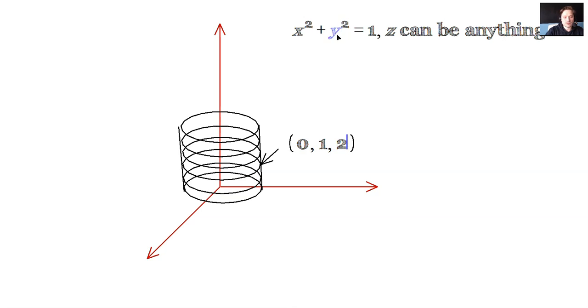And it would make this true because the following is true. 0 squared plus 1 squared is 1. 1 equals 1 is true. z can be anything, including 2.